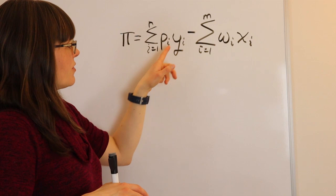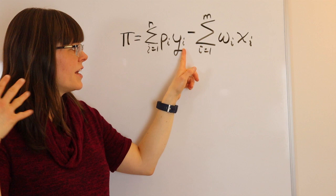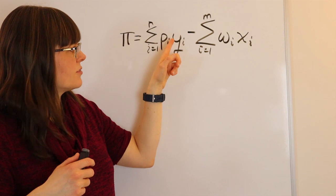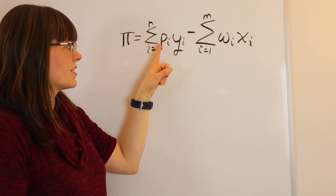So this would be outputs, so this would be like tacos, burritos, nachos, enchiladas, and this is the price of each of those. There's going to be a different price for tacos and you're going to multiply that by the quantity of tacos that you produce and sell. And then there's a different price for burritos times the quantity of burritos you sell.